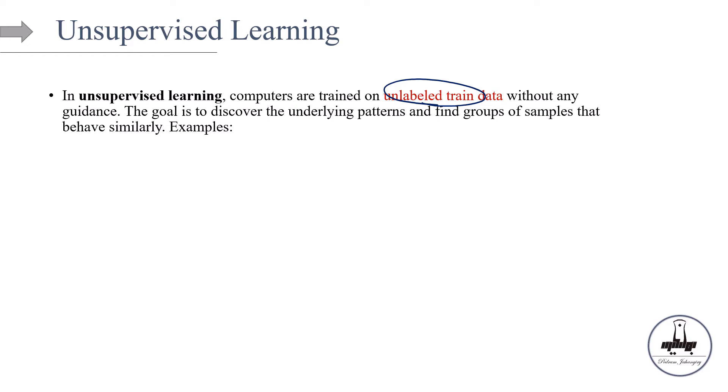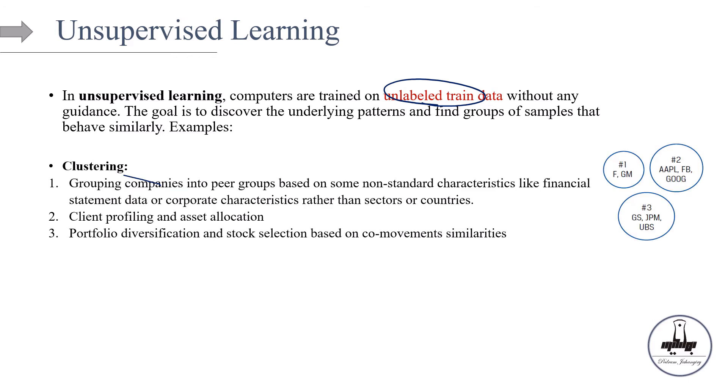You're trying to find groups of samples that behave similarly or find a linear combination of features with most variations. So what are the types of unsupervised learning? We can have clustering and principle dimensionality reduction. So in clustering, basically, you can use clustering algorithm on your data set. And at the end of the day, maybe unexpected things can suddenly pop up. So let's look at a bunch of examples in finance.